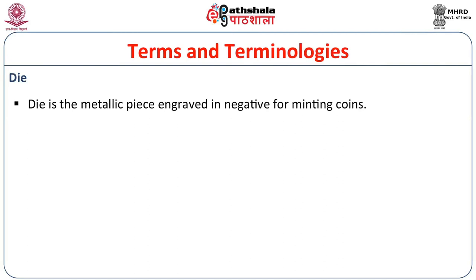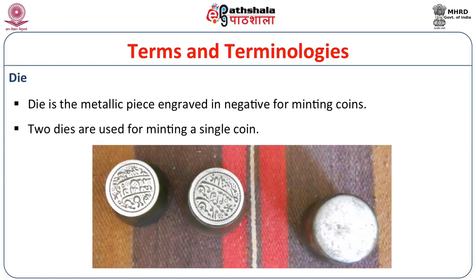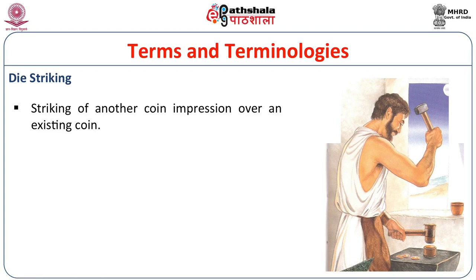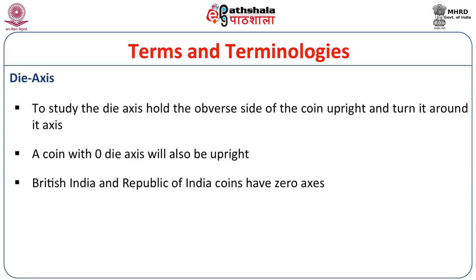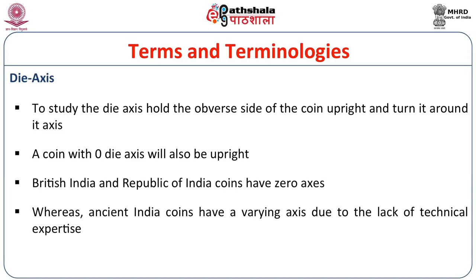A die is the metallic piece engraved in negative form for minting coins. Two dies are used for minting a single coin. Die striking refers to striking an impression over an existing coin. For die axis, hold the upper side of the coin upright and turn it around its axis — a coin with zero die axis will also be upright. British India and Republic of India coins have zero axis, whereas ancient Indian coins have a varying axis due to lack of technical expertise.